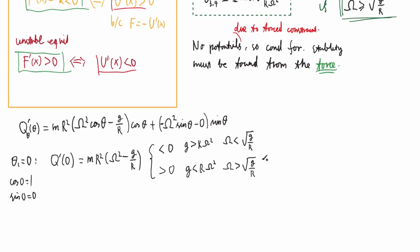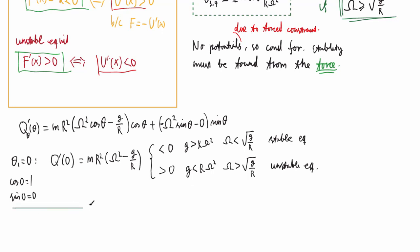So theta_1 is either a stable or unstable equilibrium depending on omega. If omega is low — less than the critical limit — then it's a stable equilibrium. If omega is large, then it's an unstable equilibrium.